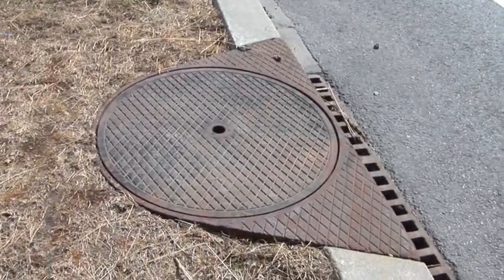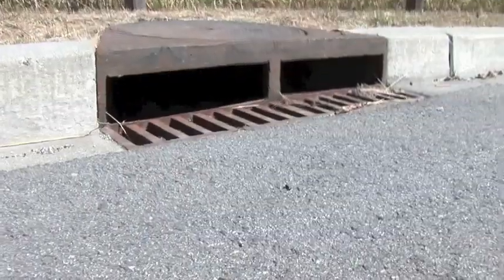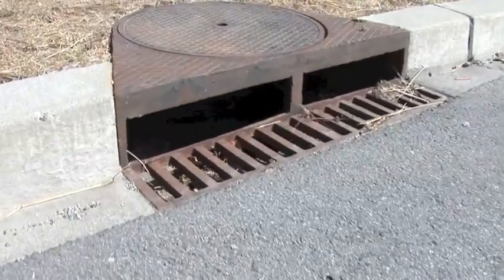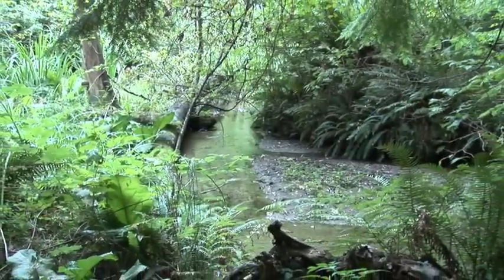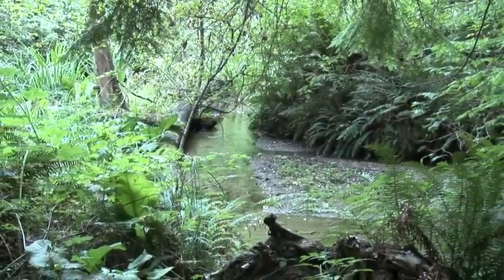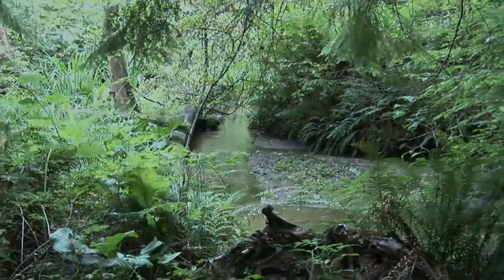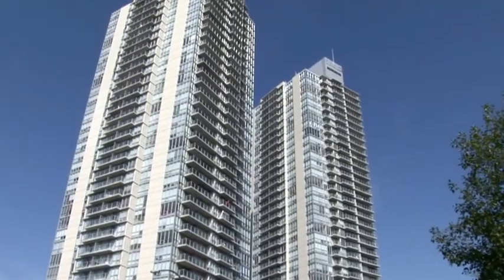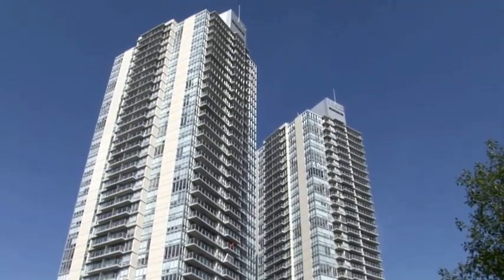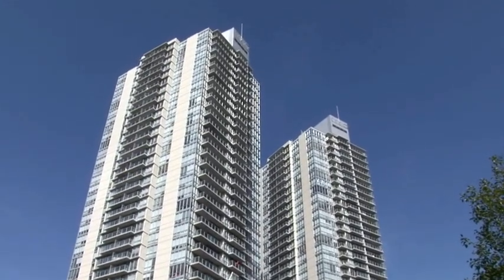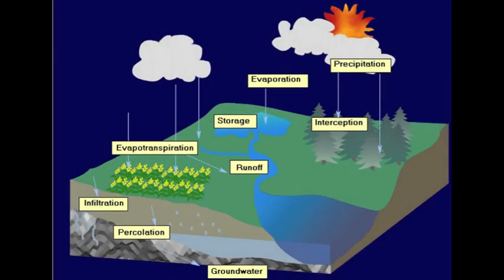Stormwater management has become an important part of urban watershed management. Urbanization has cleared forests and other ecosystems to make way for massive developments and transportation corridors. This has fundamentally altered the hydrological cycle in these systems.